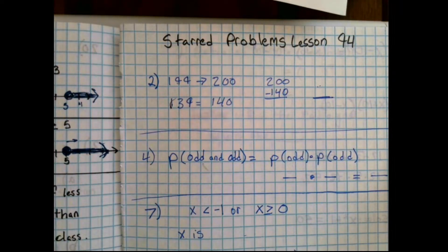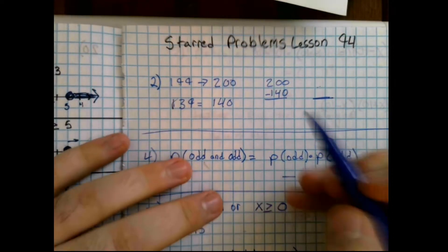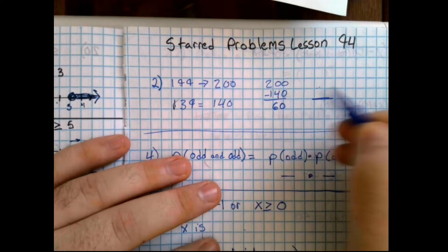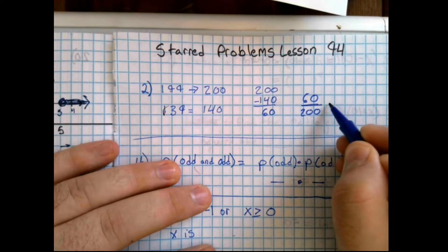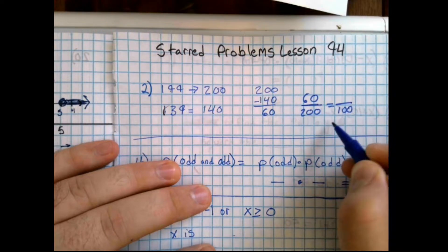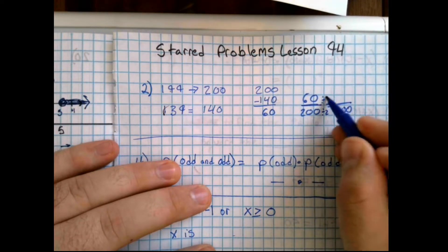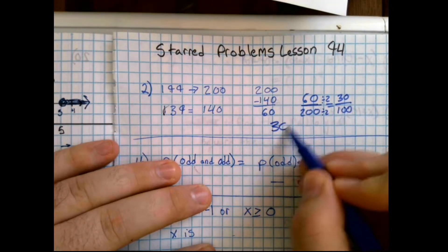Problem number 2 says estimate the percent discount on a sale of an item which normally costs $199 and now costs $139. Now $199 would estimate to about $200, $139 would estimate to about $140. To find how much the discount is, we first need to find out how much money we took off. So we would subtract the sale price from the original price, $200 minus $140 is $60. Then we would put $60 over the original price, $200, and try to get a fraction over $100. To do that we would divide by 2 on both the top and the bottom, giving us $30 over $100 or 30 percent.